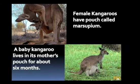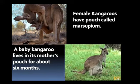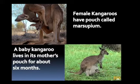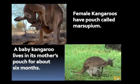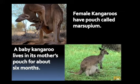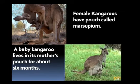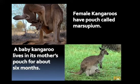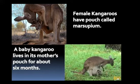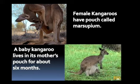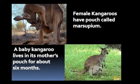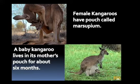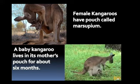Kangaroos: Female kangaroos have a pouch called the marsupium. A baby kangaroo lives in its mother's pouch for about six months. Female kangaroos have an abdominal pouch to carry their young ones. At birth, the babies are not fully developed — they develop later inside the marsupium.